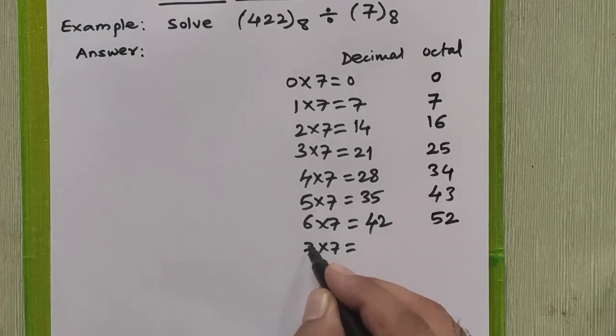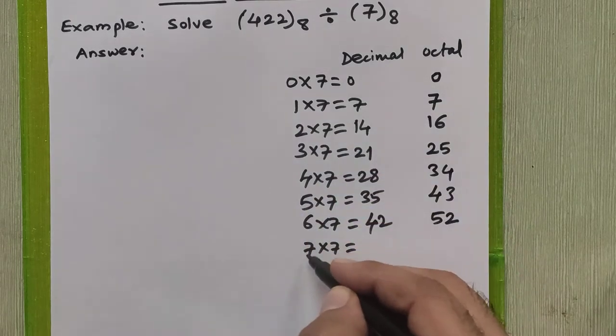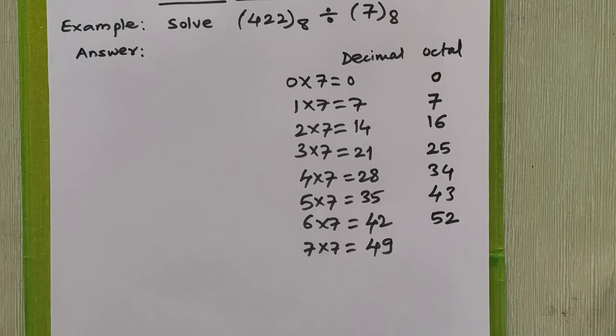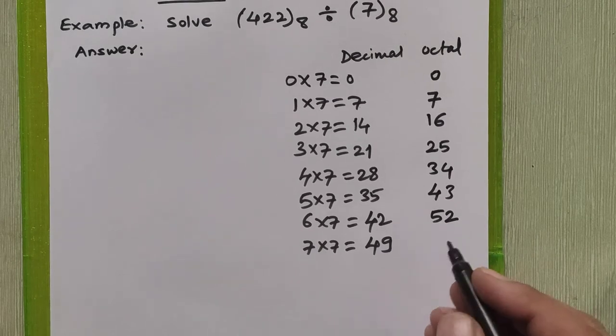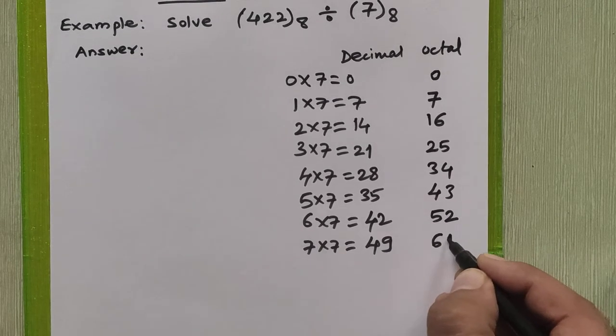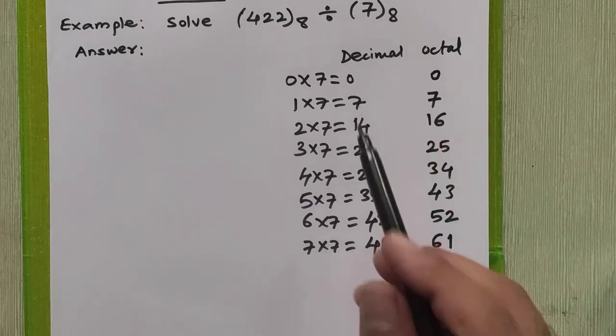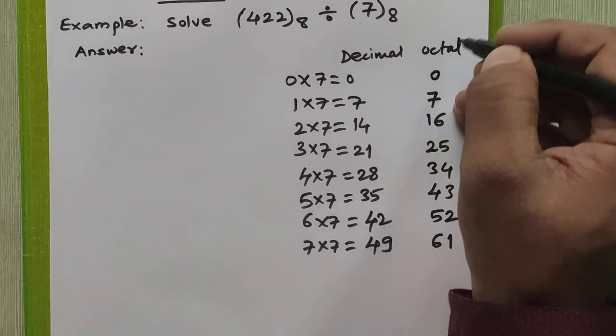6 into 7 is 42. When you convert it into octal, it is 52. 7 into 7—this is the last valid octal digit, 0 to 7 are the valid octal digits we are multiplying with—7 into 7 becomes 49 in decimal, but when you convert it into octal it becomes 61 in octal. So we have generated a table of 7 in octal.